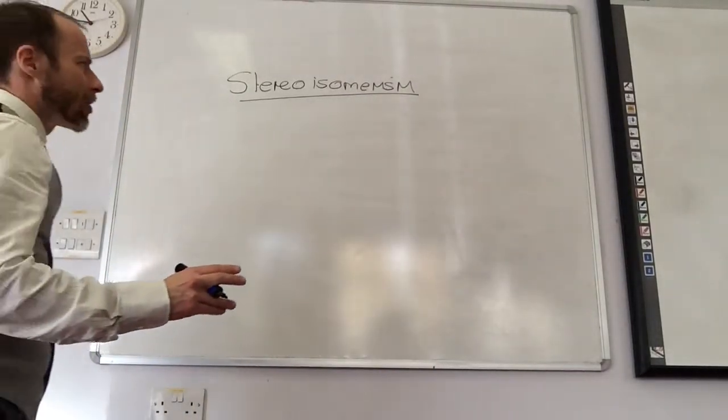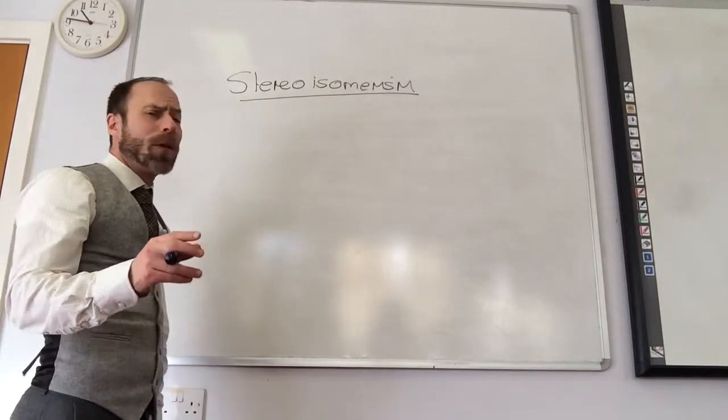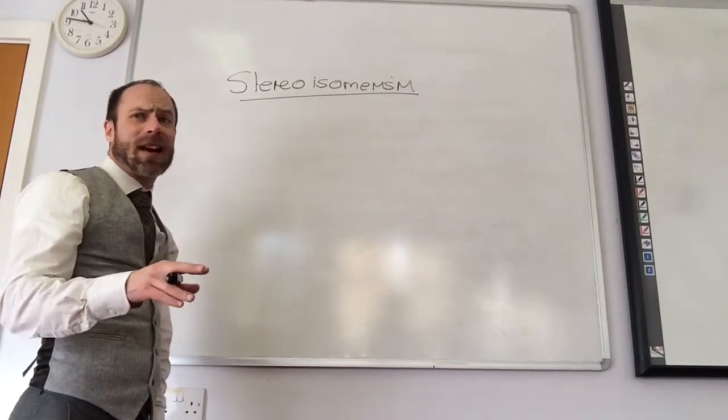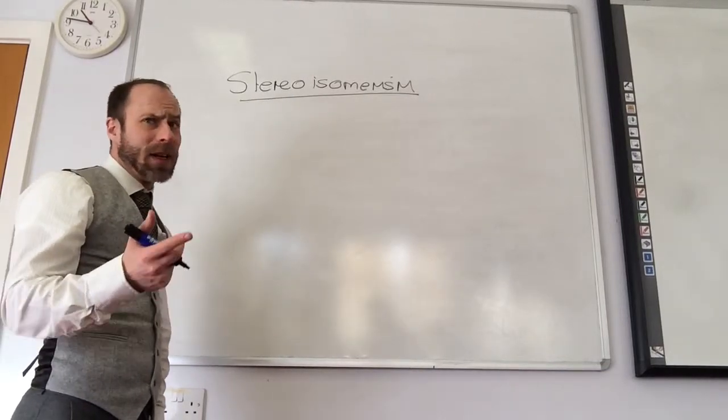So we're going to look at two types of stereoisomerism for transition metal complexes. The first one is cis-trans isomerism, the second one will be optical isomerism.